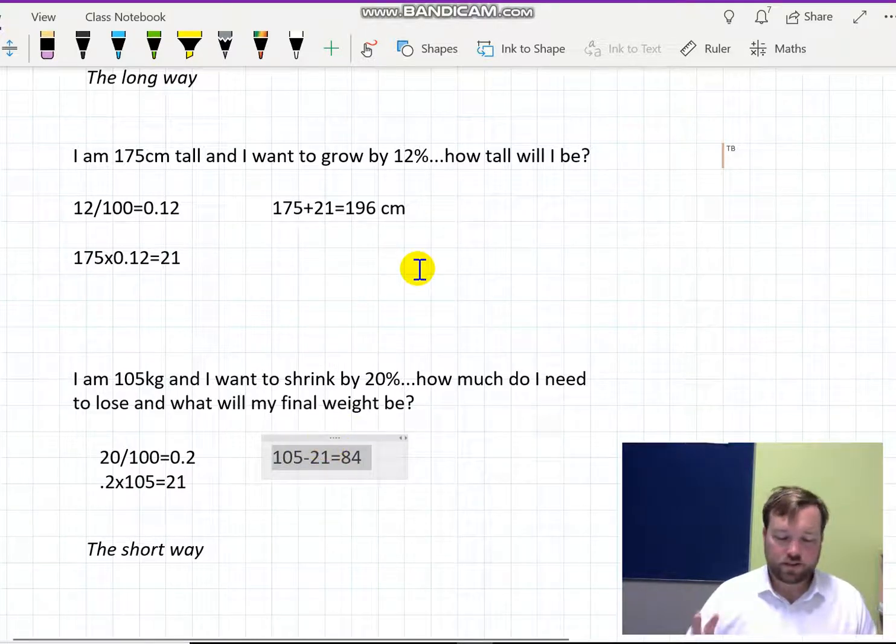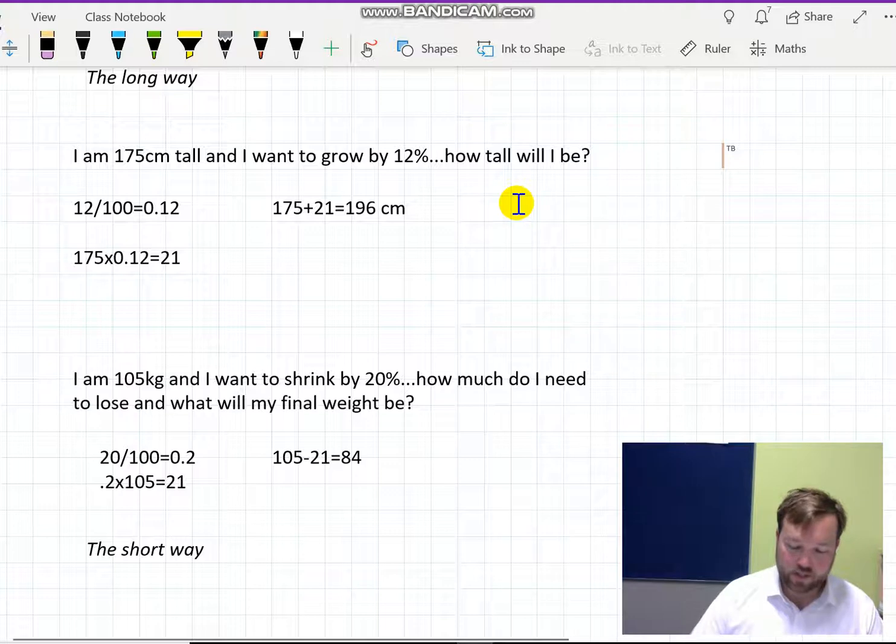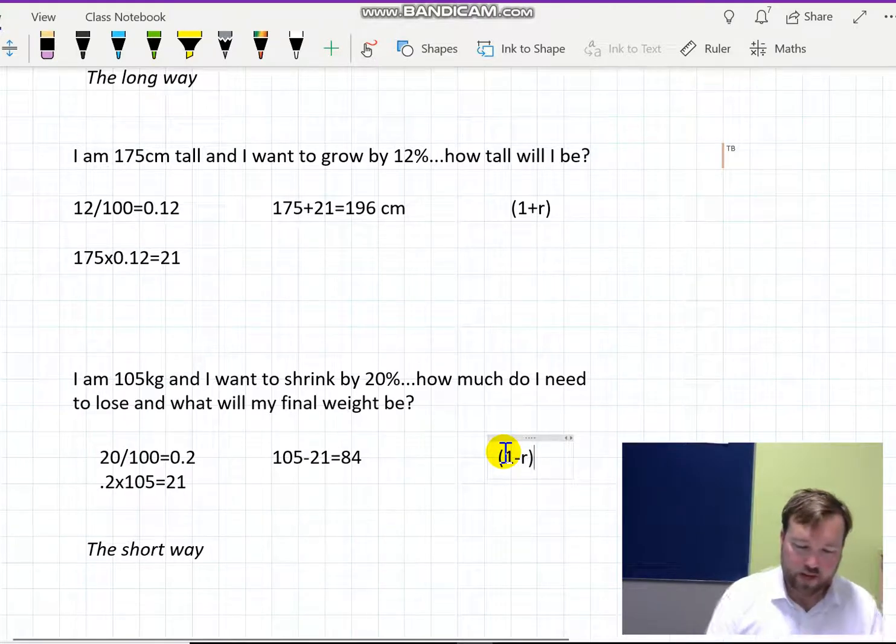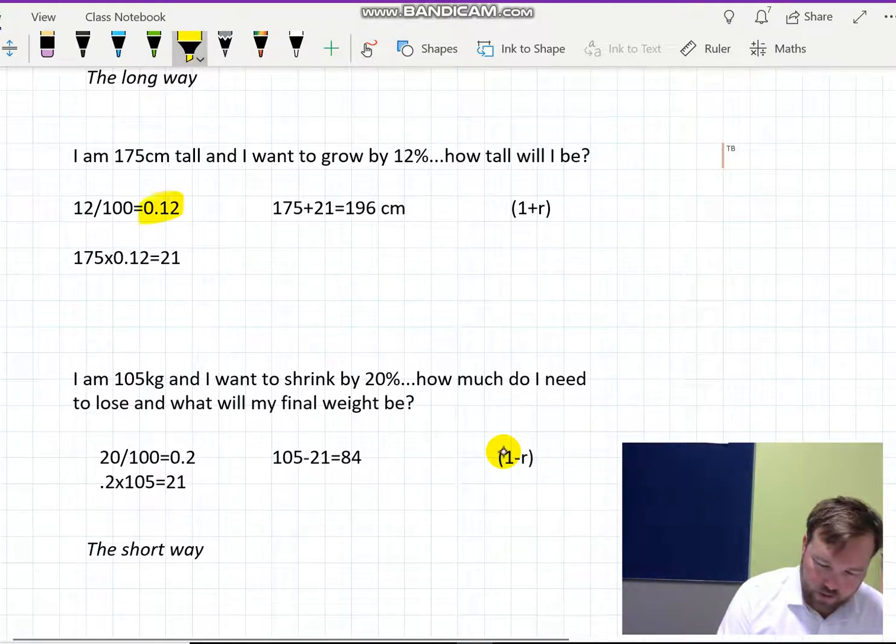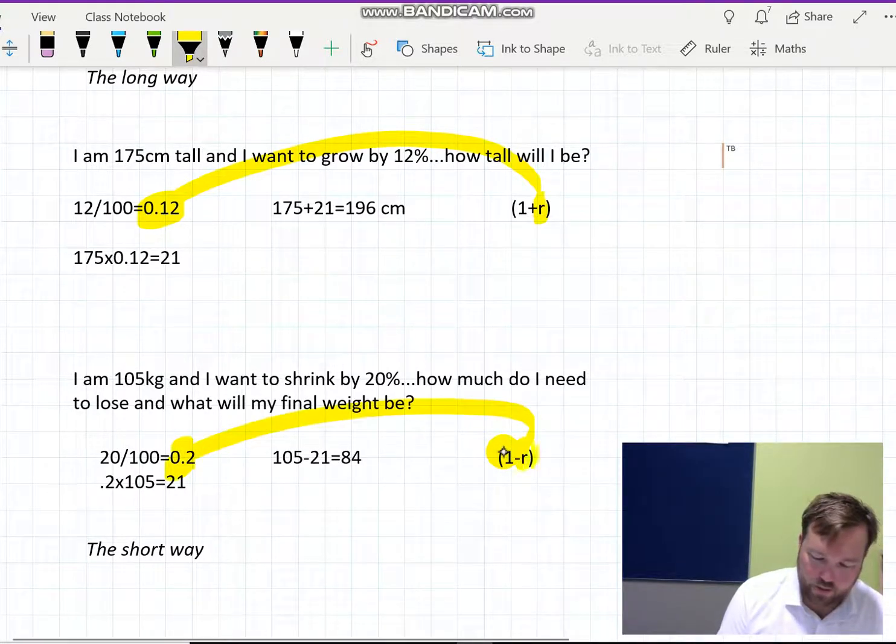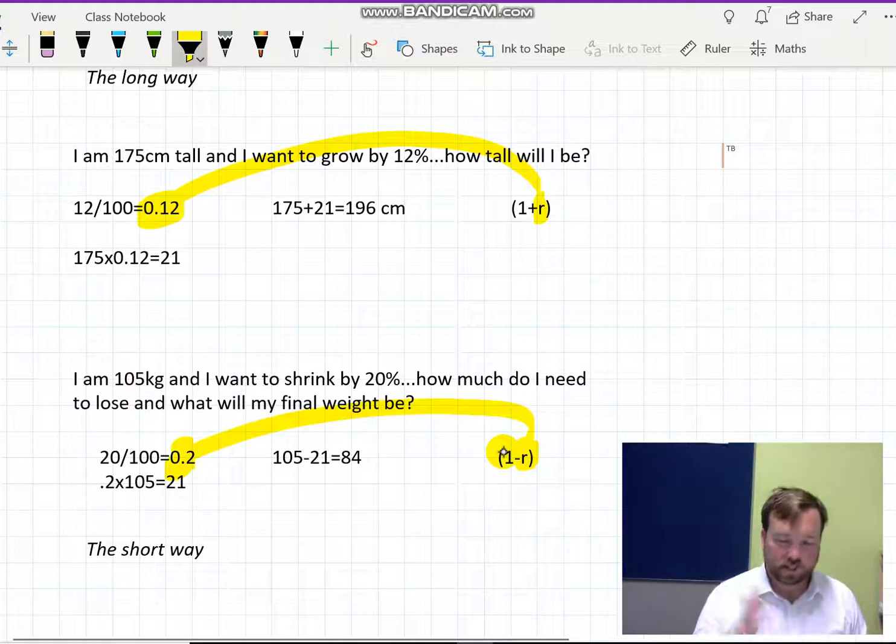All right, that's the long way. The short way is by what's called using a multiplier. And the multiplier for increasing is 1 plus r, and 1 minus r is for decreasing. r is whatever that decimal was. So it's the percentage by which we're going up or down, expressed as a decimal.